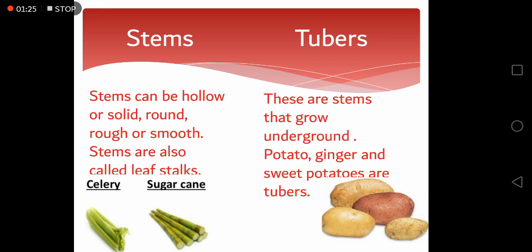Coming towards the very interesting form of vegetables — tubers. These are the stems that grow underground. Potato, ginger and sweet potatoes are tubers.